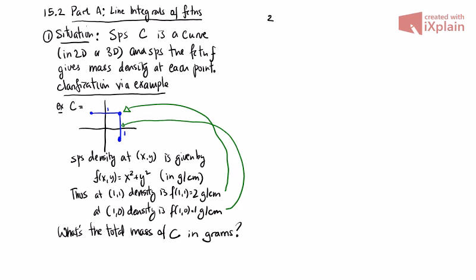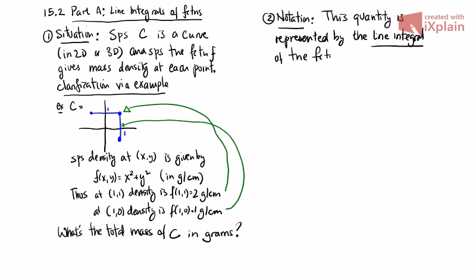Now the same question applies whenever you have any sort of density function. It doesn't have to be mass density, it could be electromagnetic field density, like anything that you can add up to get a total. But mass is a really good way of thinking about it because it's something that makes sense for us all. So the notation for this, there's an integral notation that represents this. This quantity is represented by the line integral of the function. This is denoted by the integral over C of f of x, y, z, ds. And this is a lowercase s.